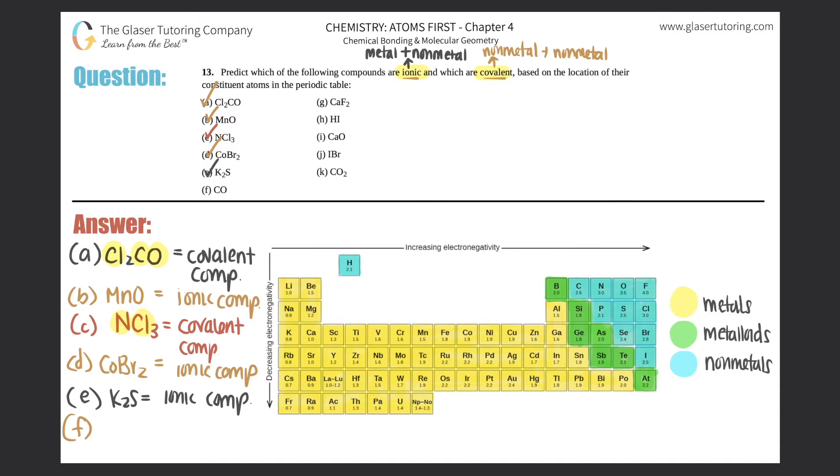F, CO. So this is carbon and oxygen. Carbon is over here, it's a non-metal, and oxygen is also a non-metal. Two non-metals. This would be a covalent compound.